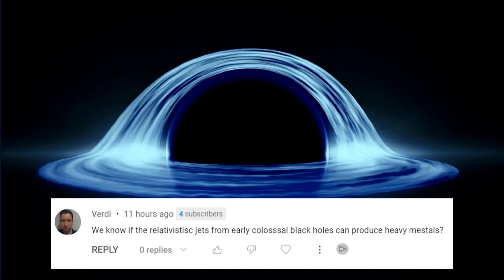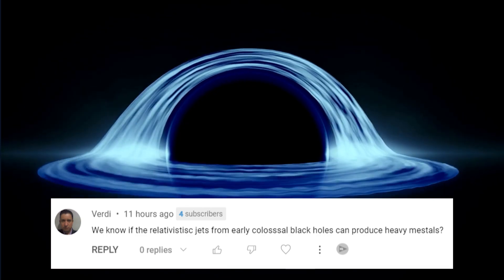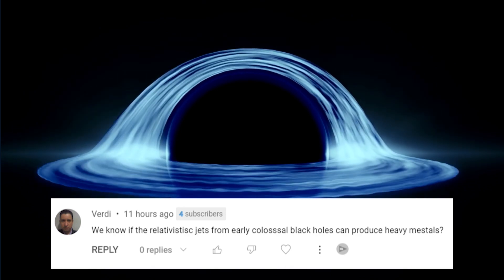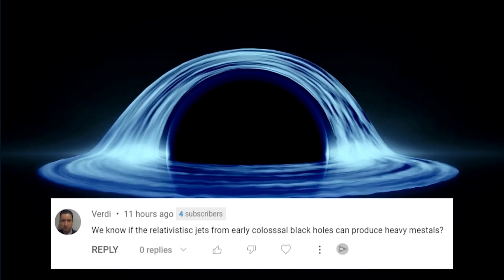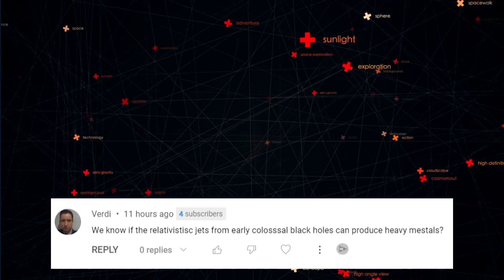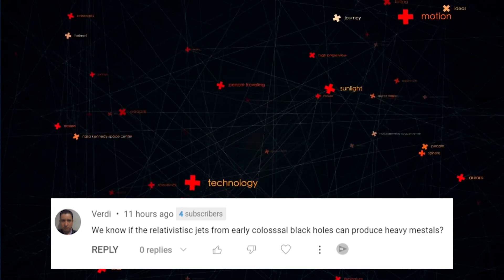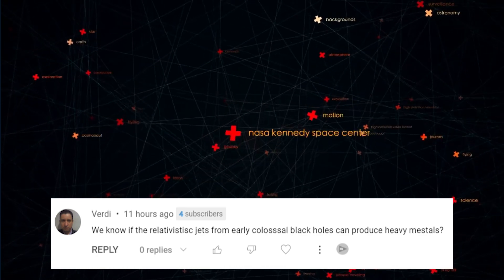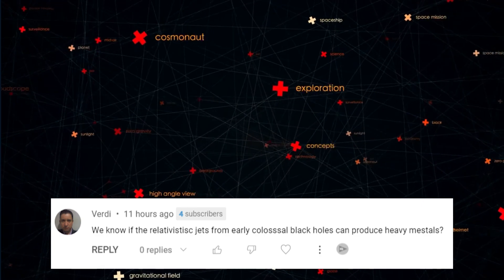scientists can study the composition of stars and galaxies to see if they contain heavy metals that could have been produced by relativistic jets from black holes. They can also use computer simulations to model the physical processes that take place near black holes and study the resulting effects on matter.